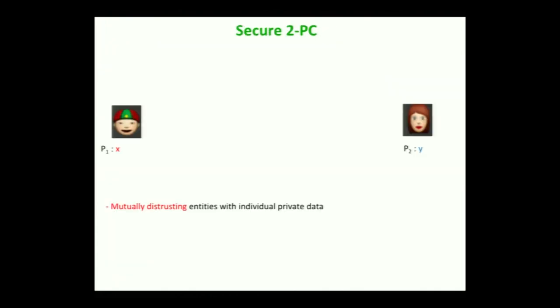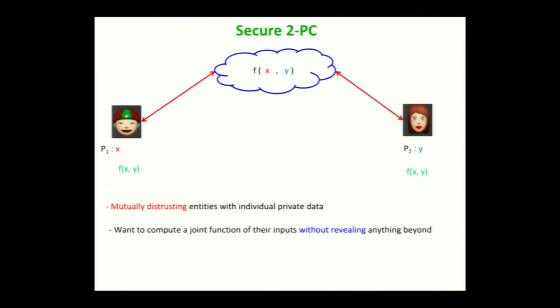Generalizing this problem gives us the secure two-party computation problem. We have two parties who do not trust each other and have private inputs x and y. They want to compute a function f on their private inputs and at the end would like to know just f(x, y) and nothing beyond — nothing beyond what is implied by the function output.